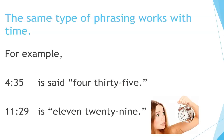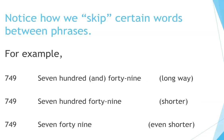The same type of phrasing works with time. For example, 4:35 is said 'four thirty-five,' and 11:29 is said 'eleven twenty-nine.' Notice how we skip certain words between phrases. For example, 749 — that's the long way — can also be said shorter as '749,' or even shorter still.